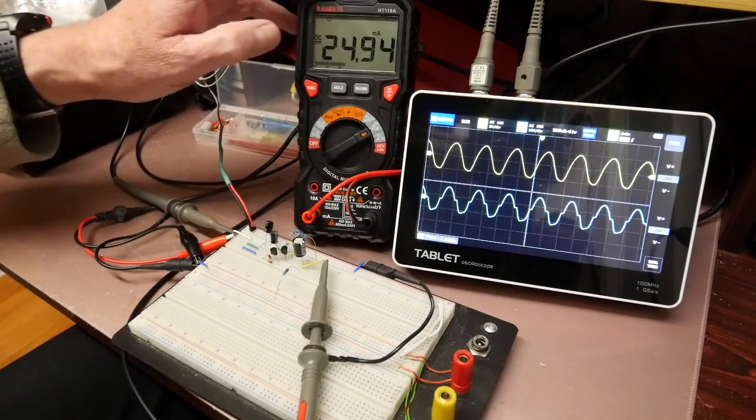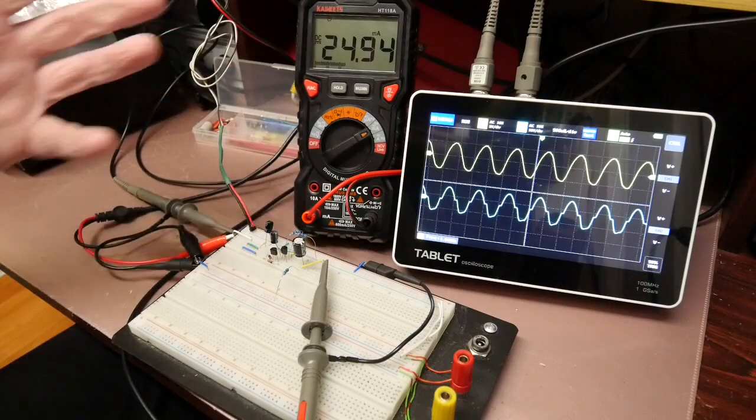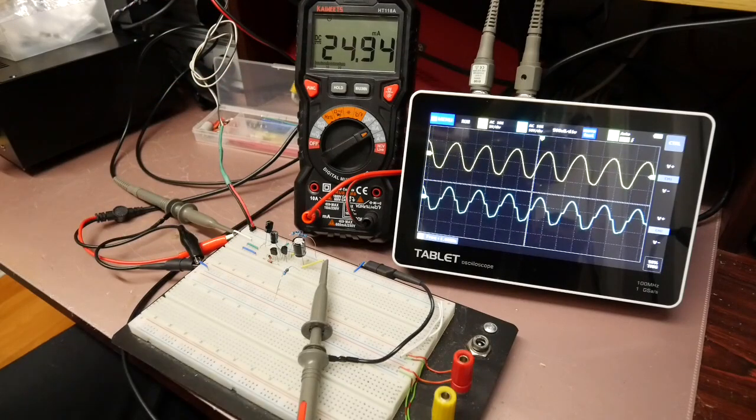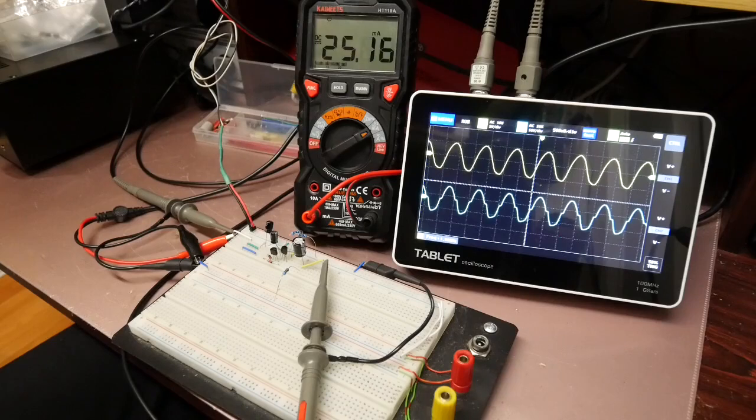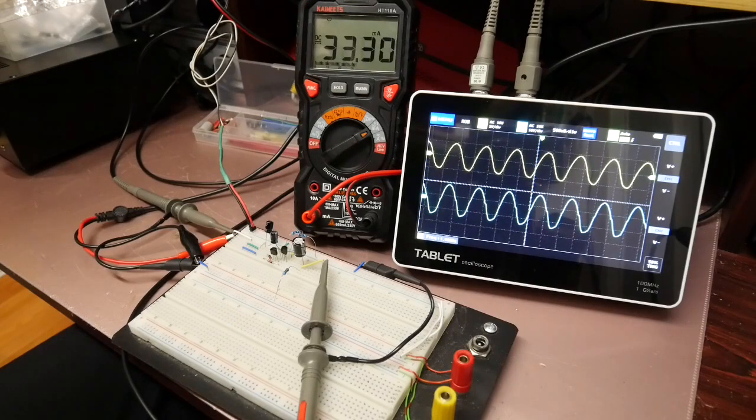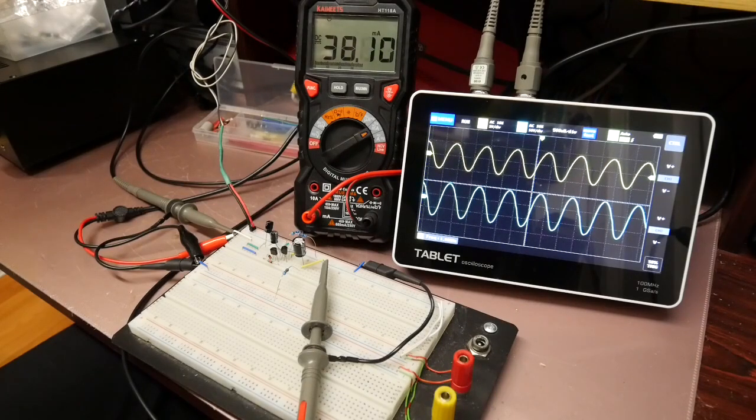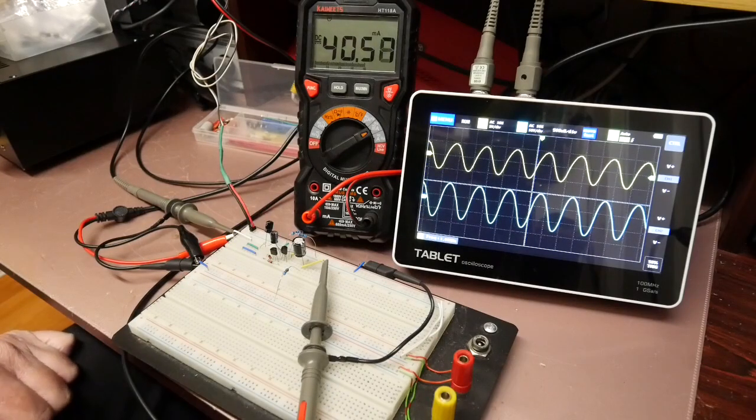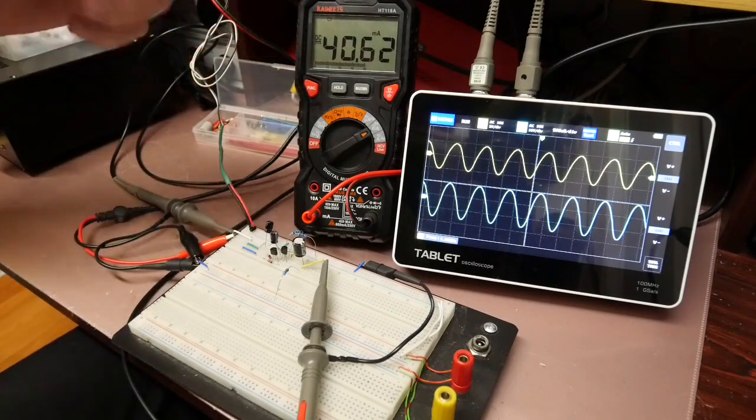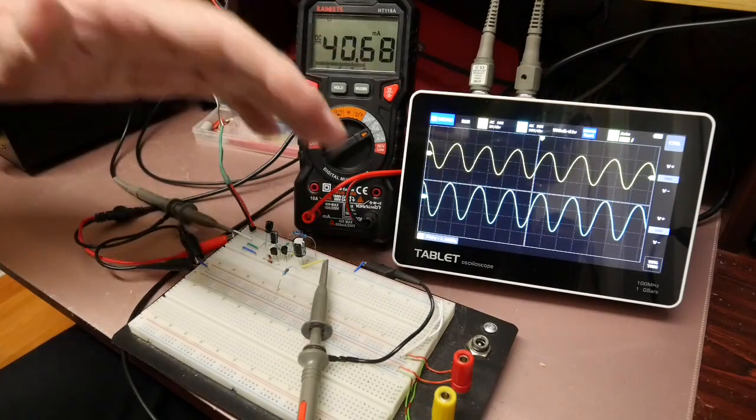You can also see the current consumption has reduced dramatically now, 25 milliamps. In an audio circuit that would manifest itself as distortion. So I'm now going to come back up with the voltage slowly, you see the current coming back up. I'm just passing seven volts there, just passing eight volts and as I approach about nine volts, yes I think now that's about gone. So at 40 to 41 milliamps about nine and a half volts the circuit is working fine.